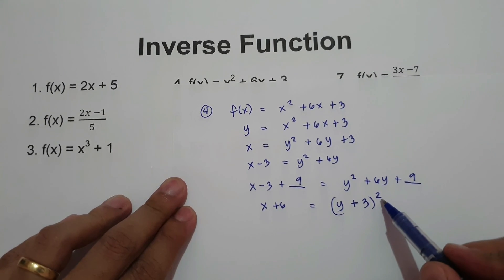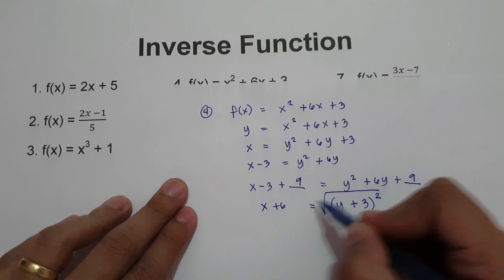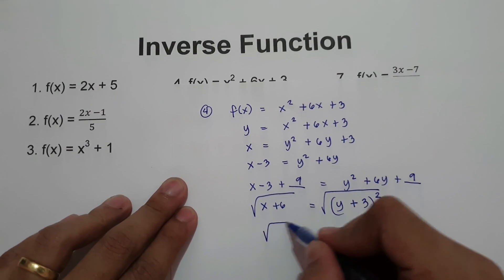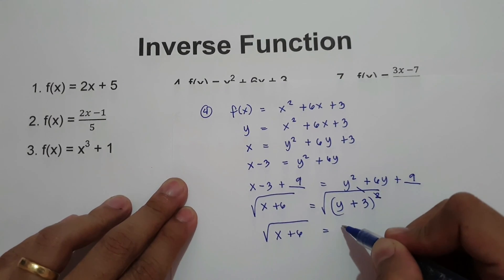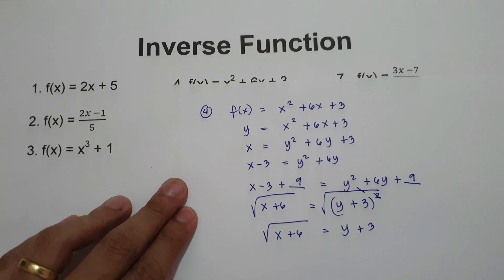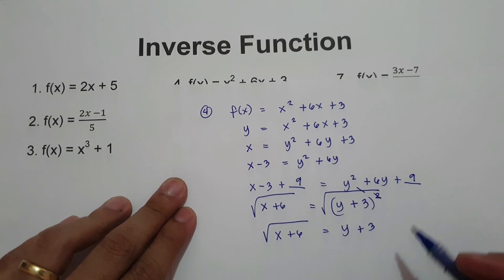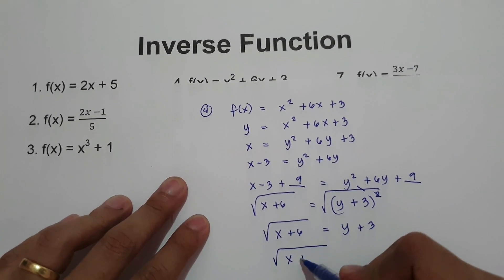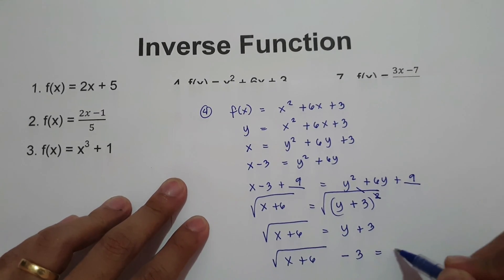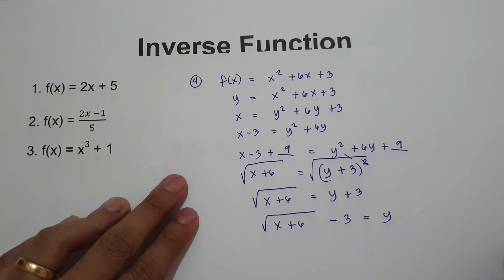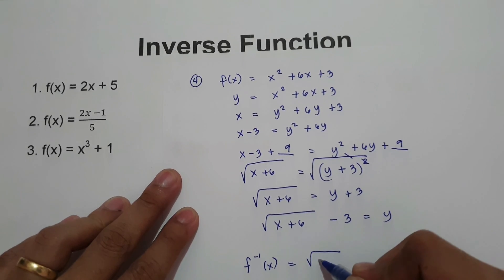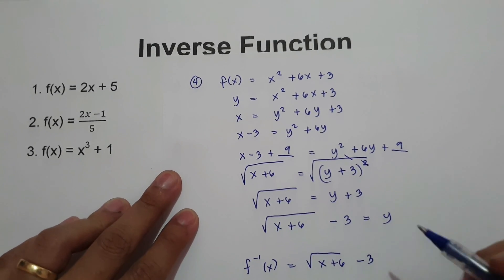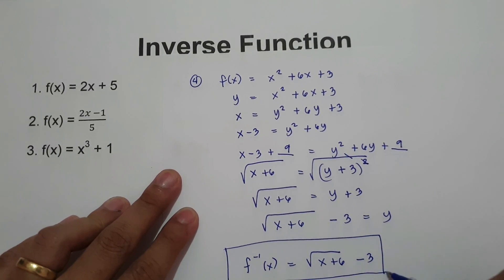We eliminate the exponent by taking the square root of both sides. So we have the square root of x plus 6 equals y plus 3. Then, to isolate y, move positive 3 to the other side: square root of x plus 6 minus 3 equals y. So our final answer is the inverse of the function is square root of x plus 6 minus 3.